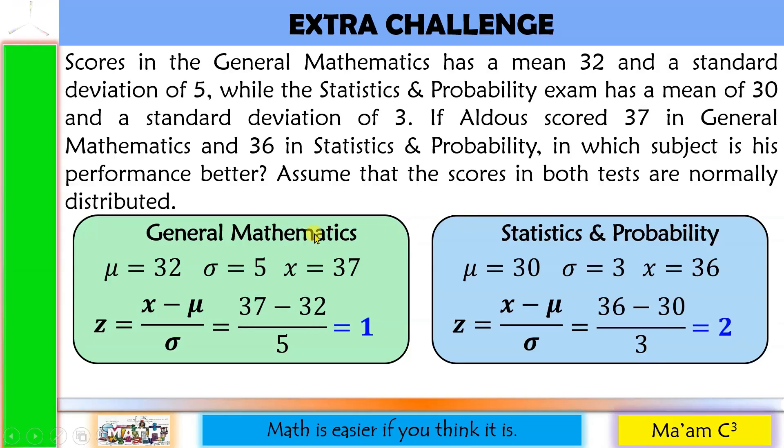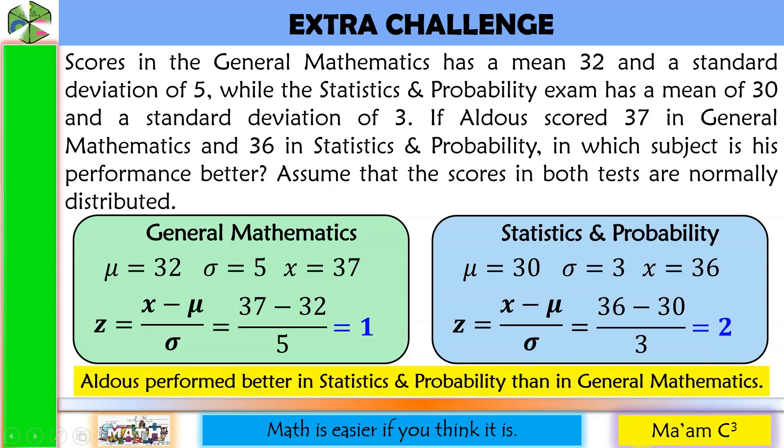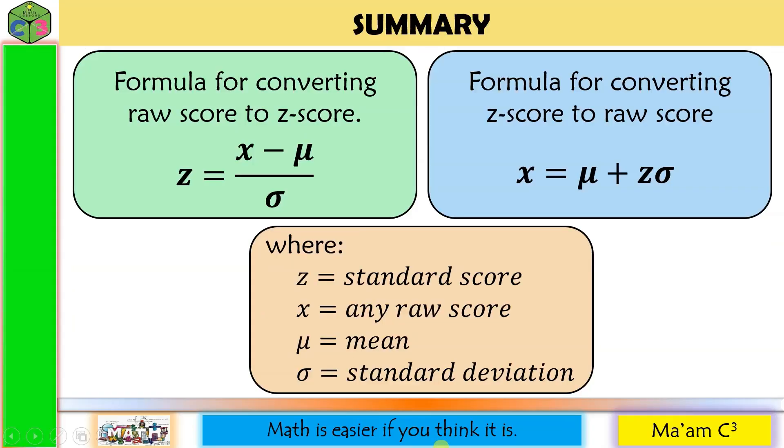In general mathematics, the Z-score of Aldous is 1. While in statistics and probability, his Z-score is 2. So this means Aldous performed better in statistics and probability than in general mathematics, because this is 2 standard deviations higher than the mean, while this is only 1 standard deviation higher than the mean. Remember, I mentioned earlier that through standardized scores or Z-scores, we can compare scores on different tests. Like on this example. This is in general mathematics, while this is in statistics and probability. If you only have raw scores, you cannot compare the scores on different tests. That is the importance of converting raw scores to Z-scores.